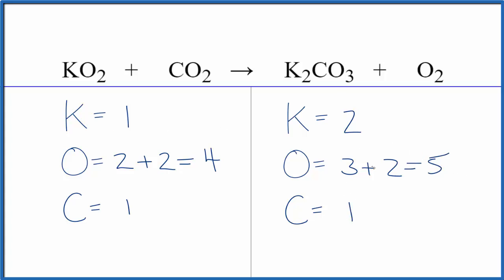I usually leave the oxygen atoms to last. Let's start with the potassium here. We could put a two in front of our KO2. One times two, that would give us two. Those would be balanced.